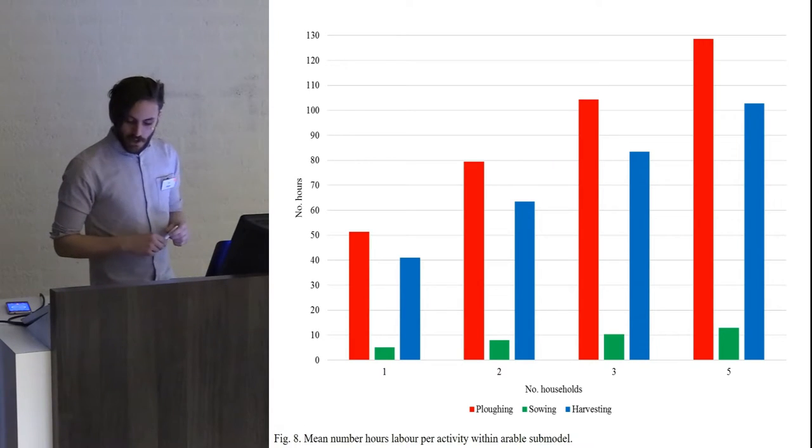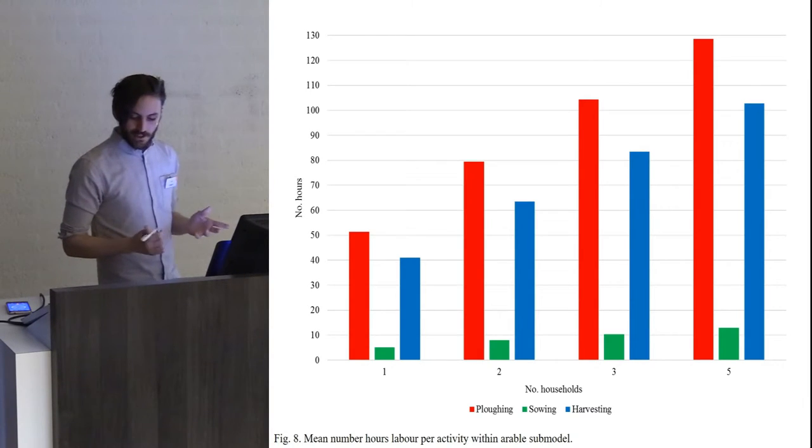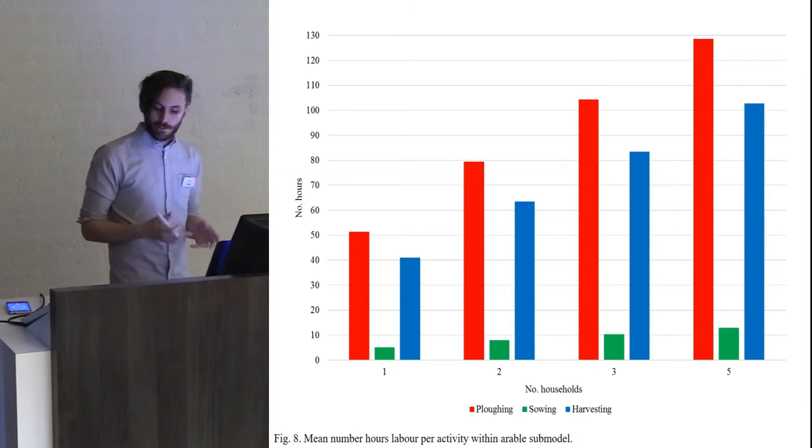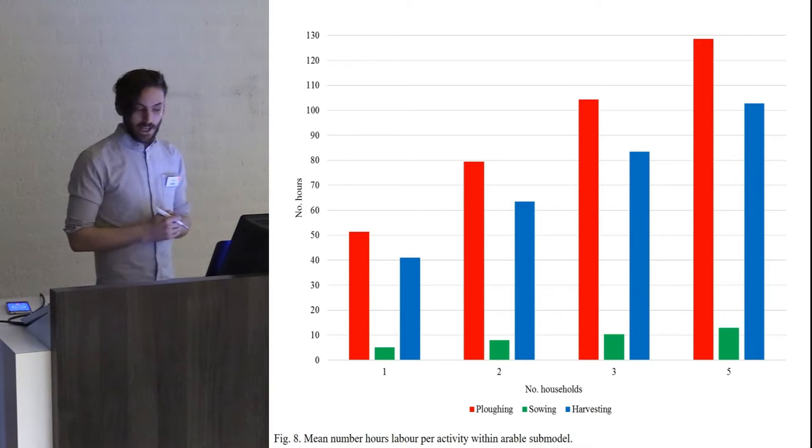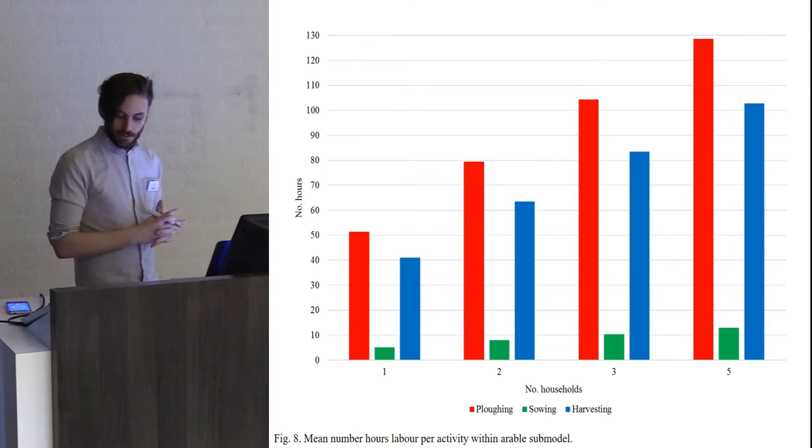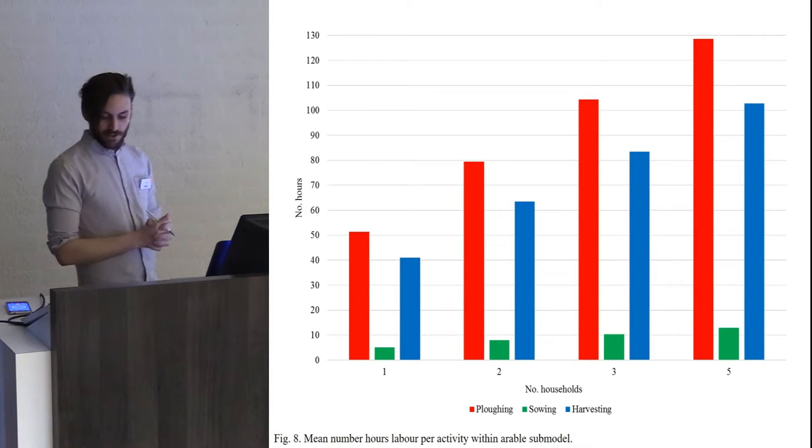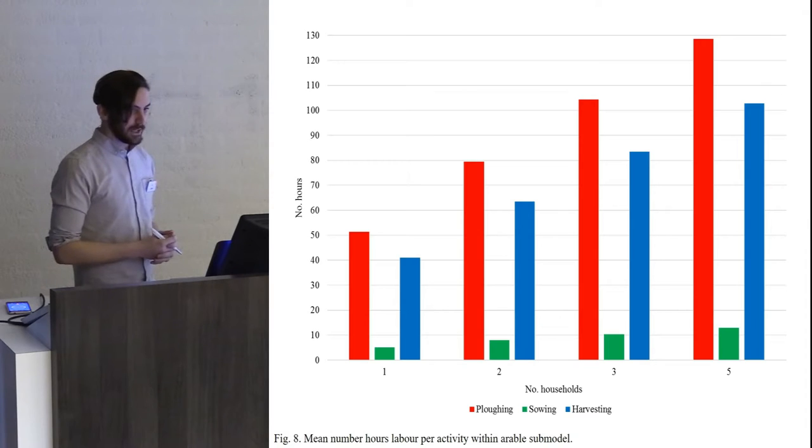Figure eight shows the mean number of hours expended per agricultural task. We've reduced these down to three major tasks: plowing, sowing, and harvesting. Owing to the assumptions used in this model, 90% of labor expended in agriculture is for plowing and harvesting. Unsurprisingly, the more households the settlement possesses, the more inhabitants, and so the greater the area of land needed to produce sufficient grain, and therefore more labor being spent.